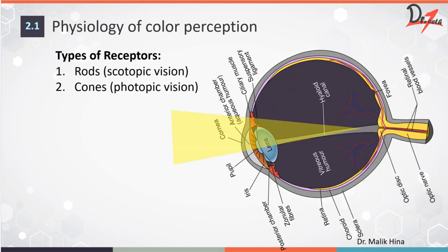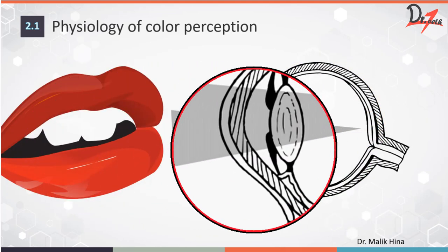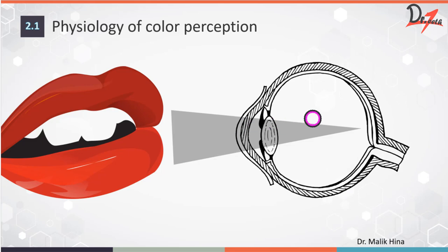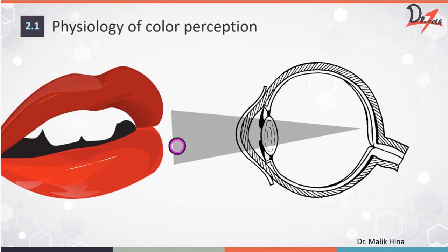The significance of this is that during shade selection, the patient should be viewed at eye level, because we have to make sure that the cones, which are responsible for color, lie in a straight line. So it is important to have the patient at eye level while performing shade selection.